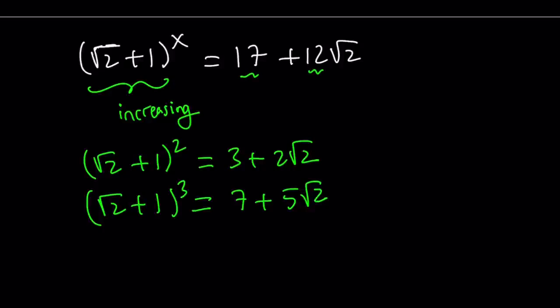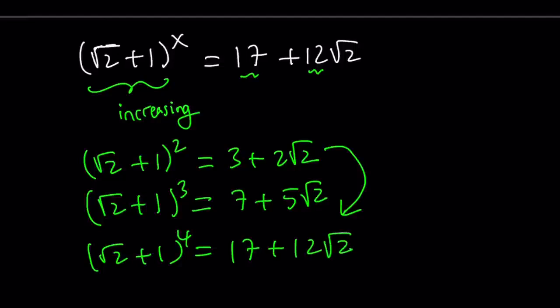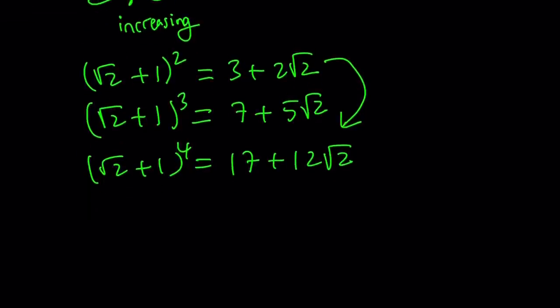So, obviously, we expect x to be larger than 3, right? And if you do square root of 2 plus 1 to the fifth power, you're going to get a larger number. So, that means it's going to be between 3 and 5. So, if we test 4, it's kind of easy to do because all you have to do is square this number. So, that's going to be 9 plus 8, which is 17, plus 12 root 2. Bingo. That gives us the answer right away. Of course, it's kind of like guess and check, but we're kind of like an educated guess. So, x equals 4 works.